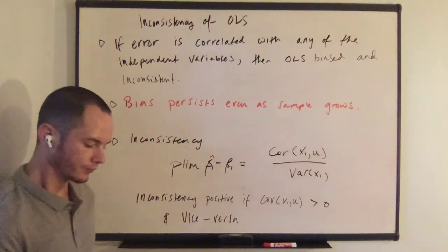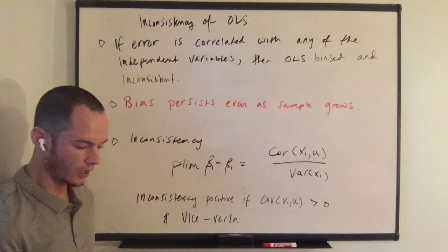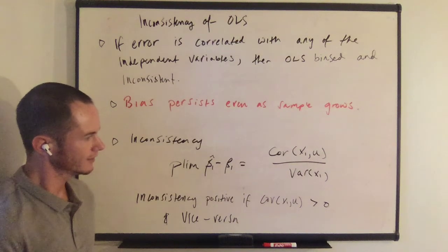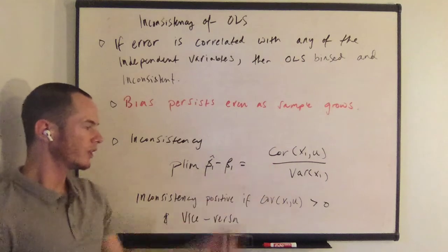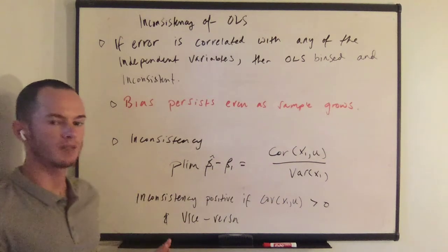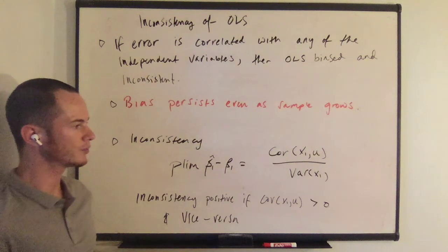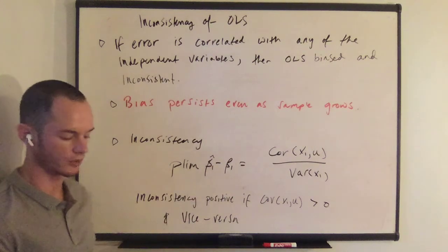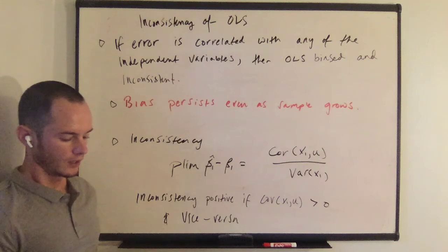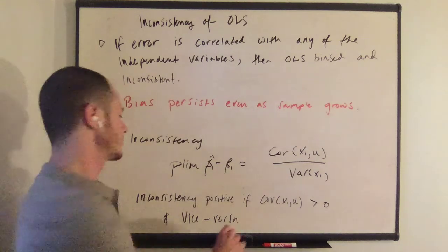If the covariance is small relative to the variance, this inconsistency might be negligible, but the thing is it's not really possible to know because u is unobserved. Let's spend a little bit more time thinking about this.